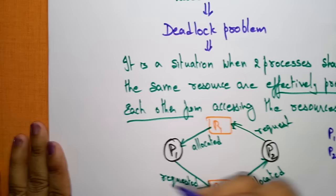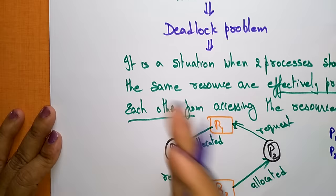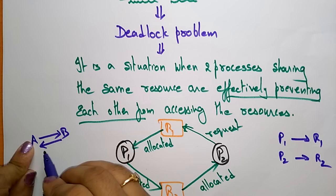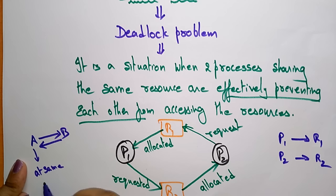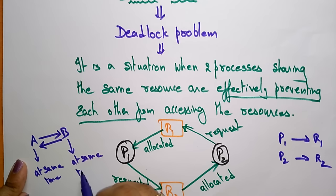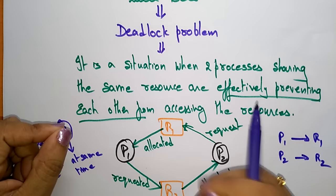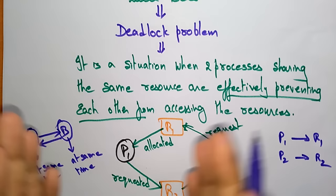Let us take a live example. Suppose A and B are friends. A wants to call B and B wants to call A. A lifts the phone and B also lifts the phone. A dials B's number and B dials A's number at the same time. Both will get an engaged tone — no one will respond because both are dialing simultaneously. That situation is called a deadlock.